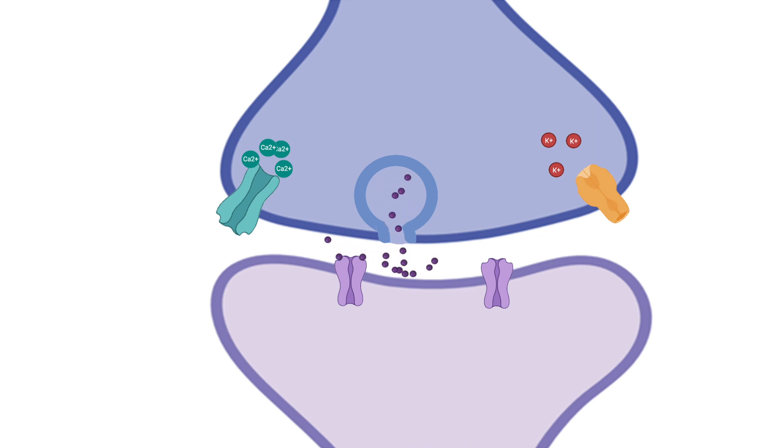Glutamate flows out of the synaptic cleft and binds to the glutamate receptors in the postsynaptic neuron, the purple neuron in this instance. This triggers the opening of the channels. This would then allow an influx of positively charged ions to flow into the cell, depolarizing it and possibly causing an action potential.